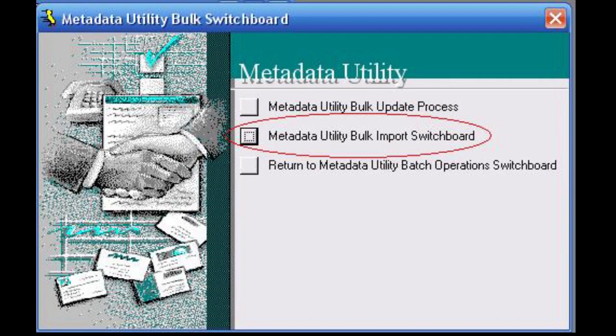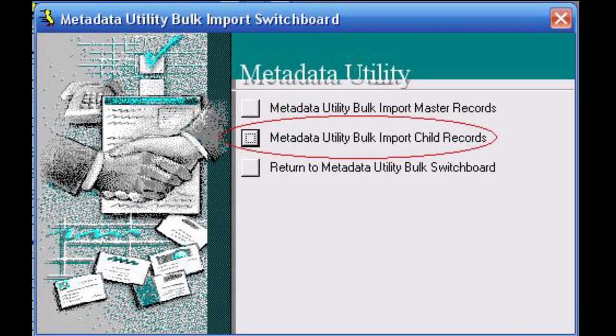Once in the Metadata Utility Bulk Switchboard, click on Metadata Utility Bulk Import Switchboard, which will bring us into the second option menu to click Metadata Utility Bulk Import Child Records.